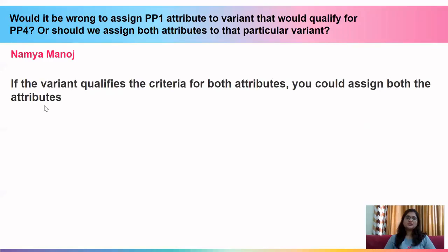The next question is by Namya. She asks: would it be wrong to assign PP1 to a variant that also qualifies for PP4, or should both attributes be assigned? If the variant qualifies the criteria for both attributes, you could assign both.